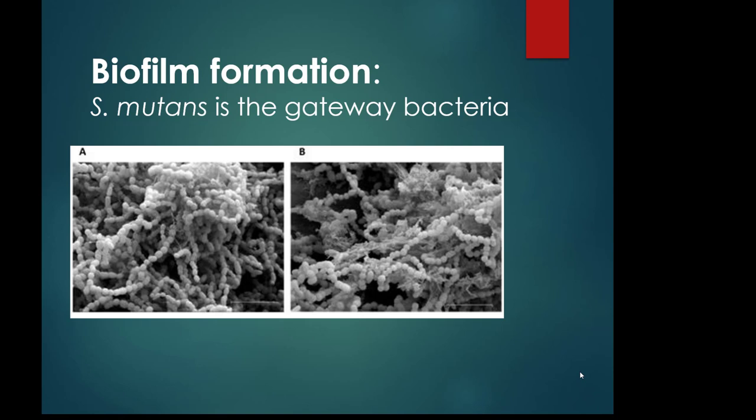Once the enamel is degraded, other bacteria in the biofilm get in and start degrading the dentin, and if it progresses it goes into the pulp, causing a serious infection. This image shows the Streptococcus mutans bacteria in a streptococcus arrangement, showing just how many there are in the biofilm, and you can also see the extracellular matrix they produce. Streptococcus mutans is considered the causative agent of dental caries because it is the gateway bacteria to biofilm formation and acid production.